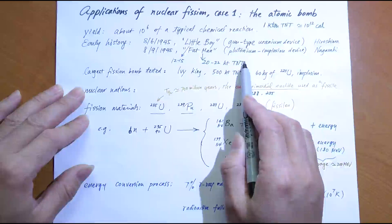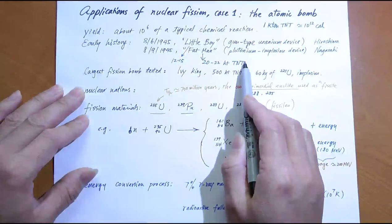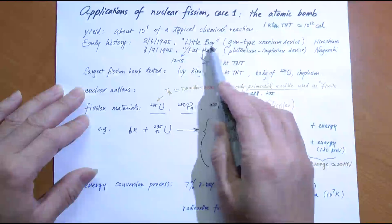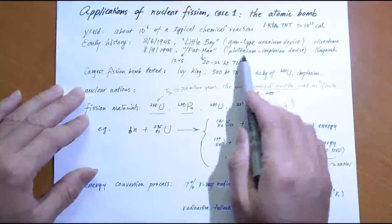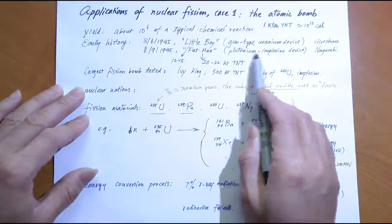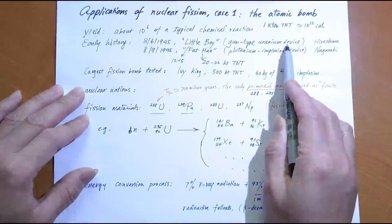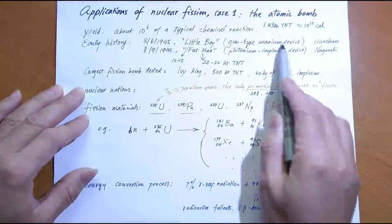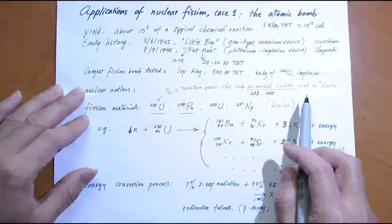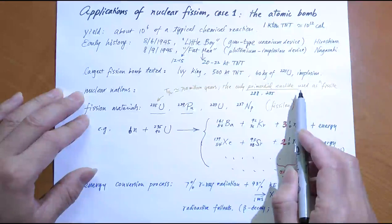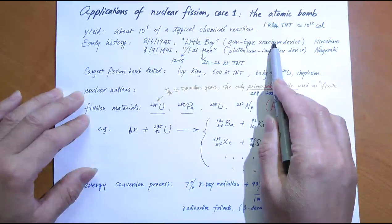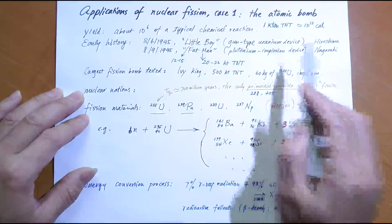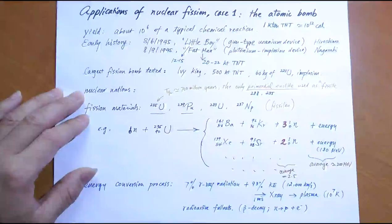From a technical point of view, both bombs were of different designs. The first, Little Boy, is called a gun-type uranium device. The second is called a plutonium implosion device. We're going to talk briefly about the technical differences between these two.